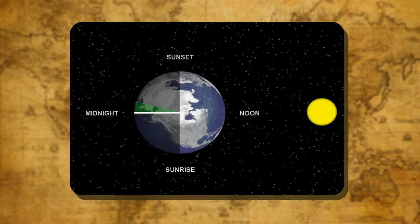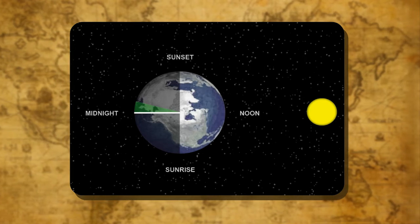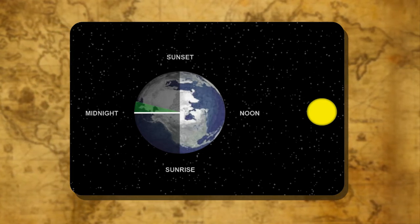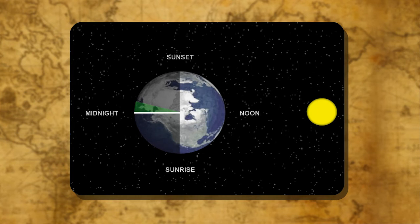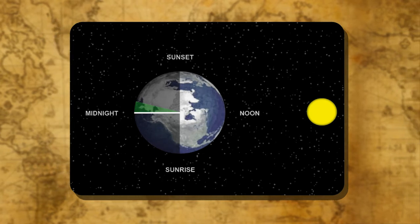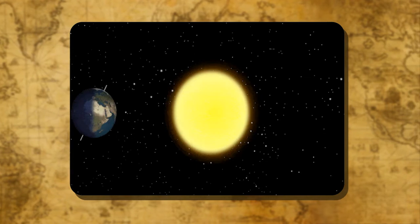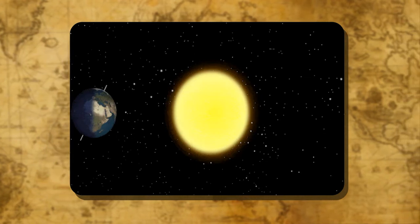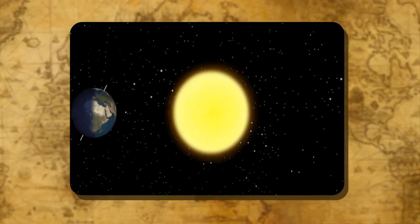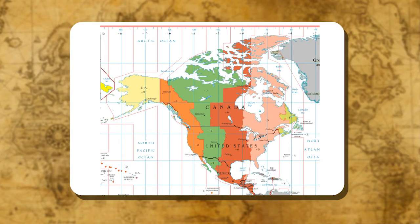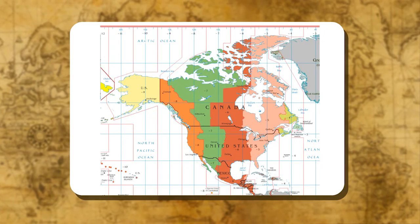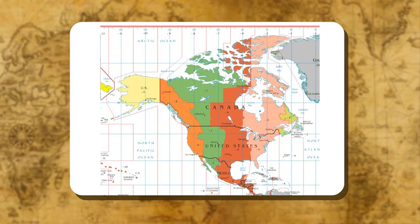The earth rotates from west to east through 360 degrees in 24 hours and so the sun appears to move from east to west at the rate of 15 degrees in 1 hour or 1 degree in 4 minutes. The places located east of Greenwich will be ahead of Greenwich time and those to the west will be behind it.